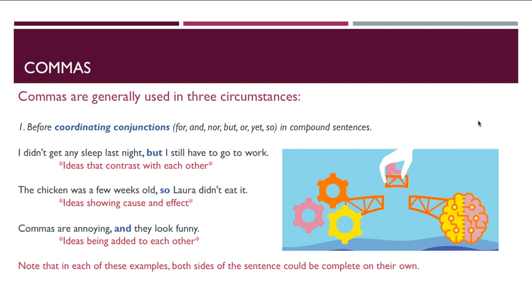First, let's talk about commas. Commas are generally used in three circumstances. First, they're used before coordinating conjunctions like for, and, nor, but, or, yet, so — which are also called FANBOYS — in compound sentences.